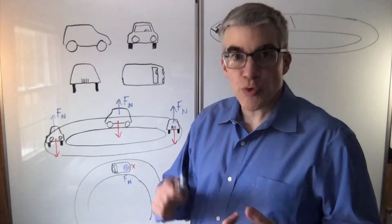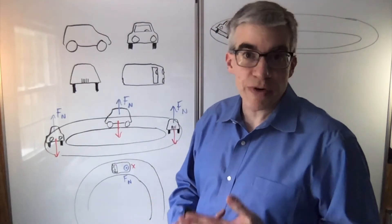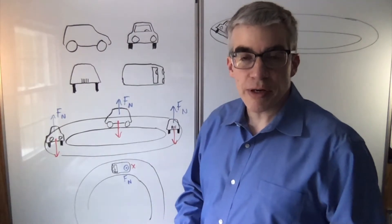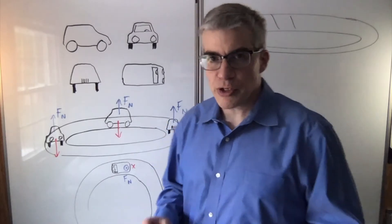You only know a few forces. Normal force, gravity, tension but we don't have any ropes, and friction. And springs, but we don't have any springs either. So it's got to be friction, but which way does the friction point?